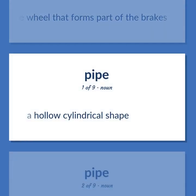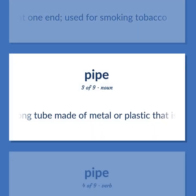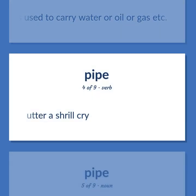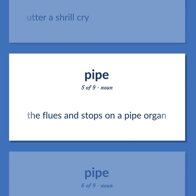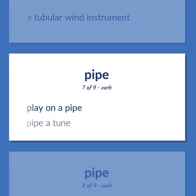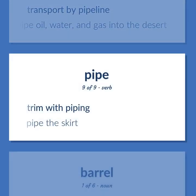Pipe: a hollow cylindrical shape. A tube with a small bowl at one end, used for smoking tobacco. A long tube made of metal or plastic that is used to carry water, oil, or gas. Utter a shrill cry. The flues and stops on a pipe organ. A tubular wind instrument. Play on a pipe — pipe a tune. Transport by pipeline — pipe oil, water, and gas into the desert. Trim with piping — pipe the skirt.